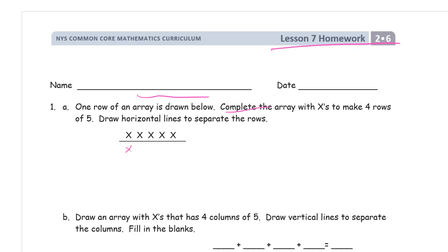And it says draw horizontal lines to separate the rows. Now we're trying to make this an array so we want to try and be careful that we have columns and rows.